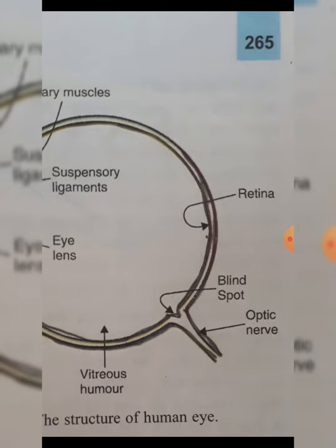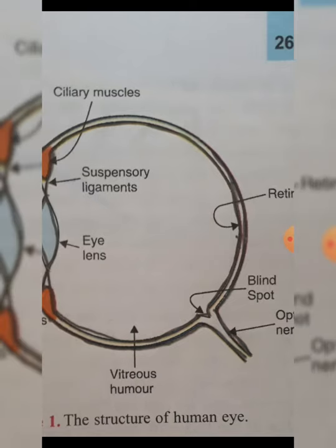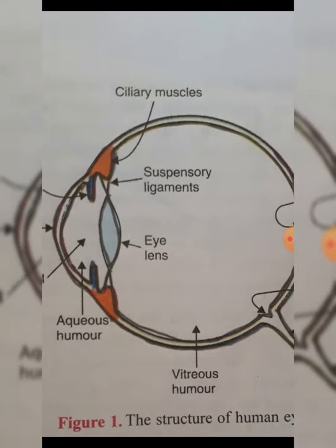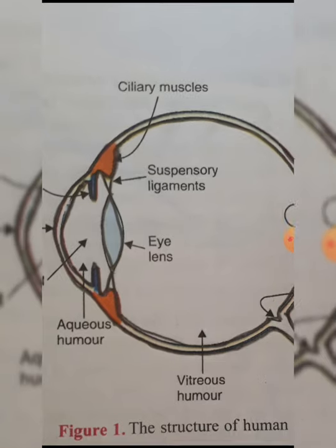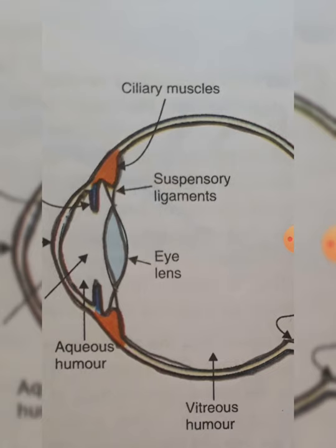Although the eye and camera work similarly, there is one key difference: the focal length of the lens in a camera is fixed and cannot be changed, whereas the focal length of the convex eye lens can be changed. This change is brought about by the action of the ciliary muscles, which alter the thickness of the eye lens while focusing.